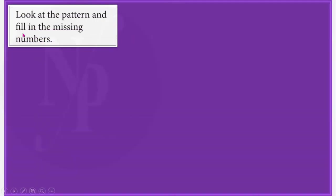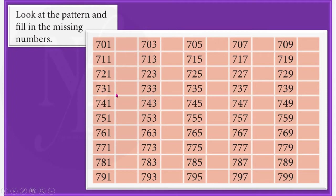Look at the pattern and fill in the missing numbers. So here we have a number grid in which some numbers are printed and some other numbers are missing. It is starting from 701. The next number is missing, that is 702. We should write these numbers. Again 703 is printed. If you observe carefully, all odd numbers from 701 to 799 are printed here. So we should fill these boxes by writing all even numbers from 701 to 800.